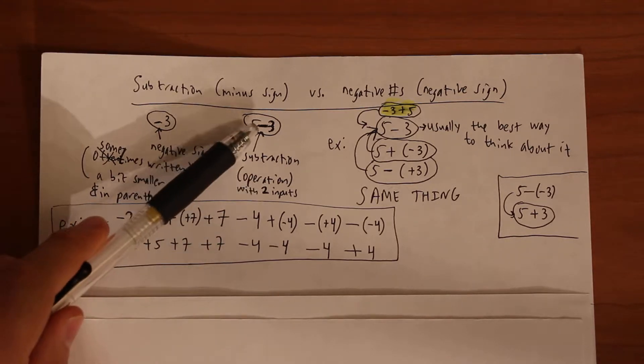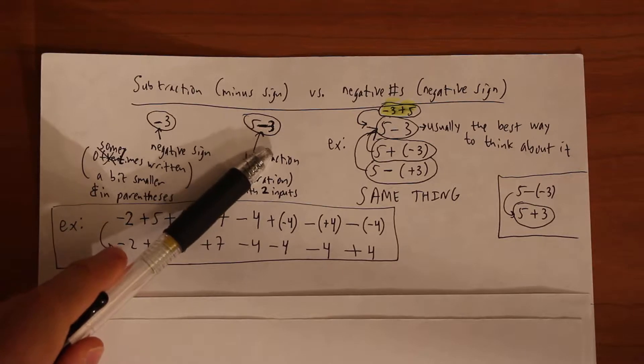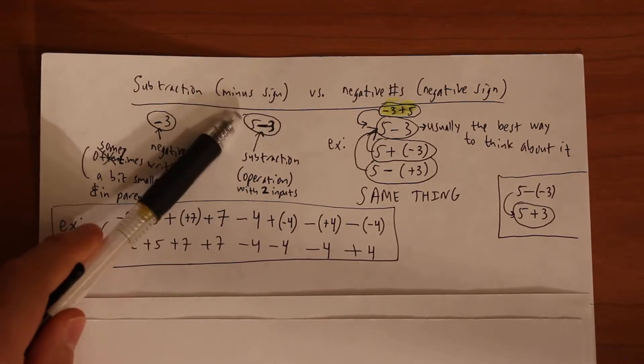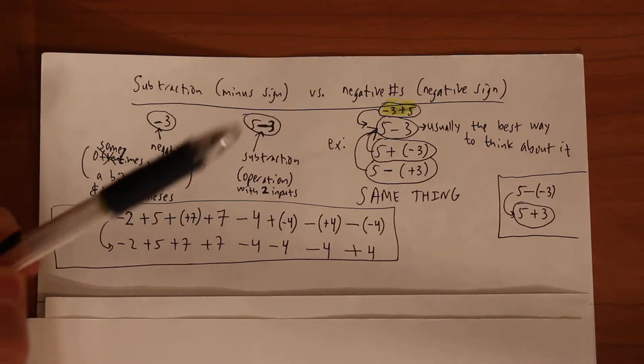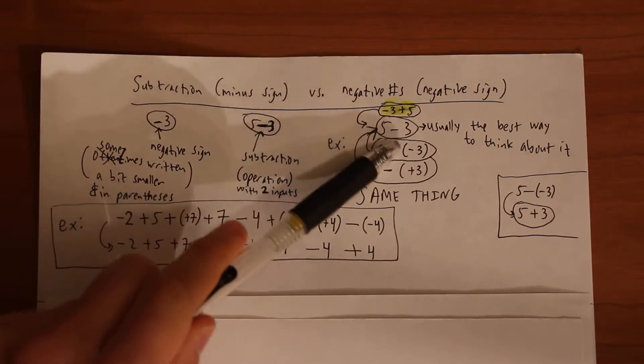If for example, this is not a negative three because otherwise there's no operation in between the five and the negative three. So let's take a look - here we have five minus three.